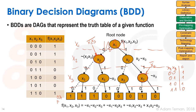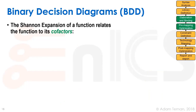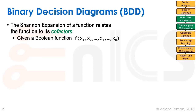If we wanted to show the BDD of the constant function 1, we would just put a pointer to the leaf of 1. Another property of the binary decision diagram relates to the Shannon expansion theorem. The Shannon expansion of a function relates it to its cofactors. Cofactors are very important in computational boolean algebra — you can use them to find the derivative of a boolean function.